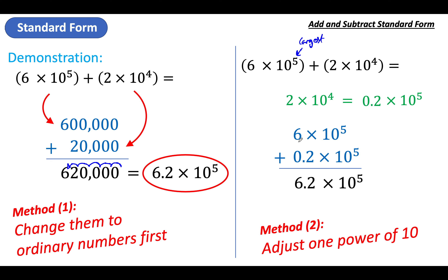Notice nothing happens with the powers — you don't need to adjust them again because you've already adjusted the place value. That is a lot more efficient. So find the bigger one, then change the other one so the power matches. Match the powers and then you can just add the decimal parts.